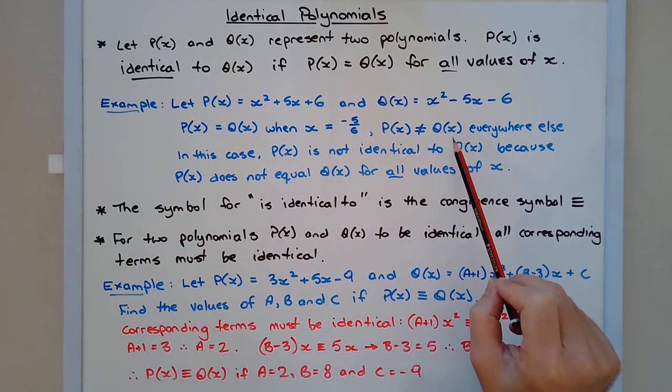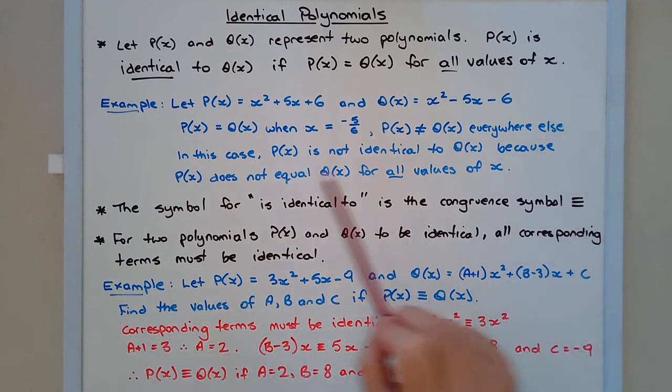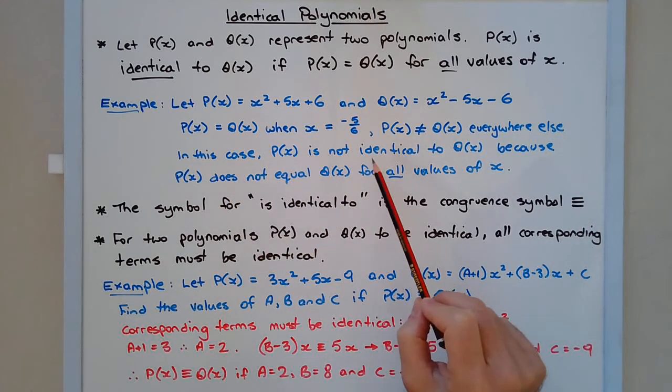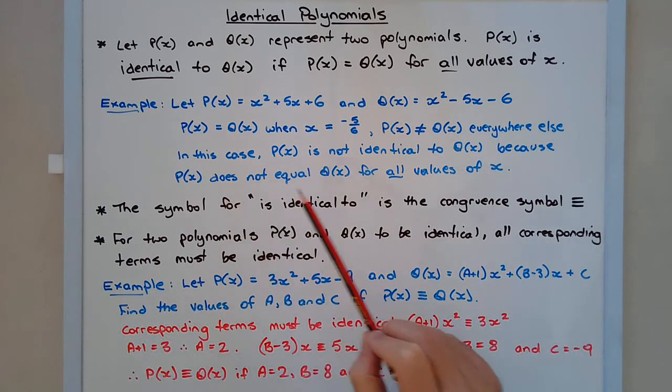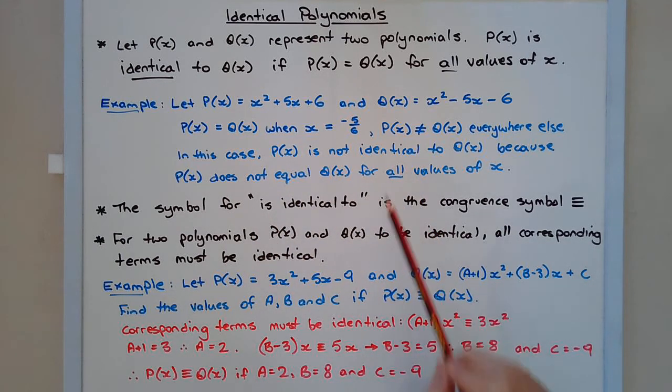Now P of X does not equal Q of X everywhere else. So in this case, P of X is not identical to Q of X because P of X does not equal Q of X for all values of X, only for one in this particular example.